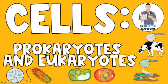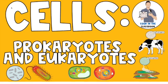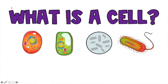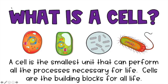But before we get into these two types of cells, let's start by defining what is a cell. You can see some examples of different cells we're going to be covering in this video, but a cell is the smallest unit that can perform all of the processes necessary for life.